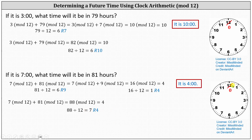Starting at zero again, we count ahead 88 hours: 12, 24, 36, 48, 60, 72, 84, then 85, 86, 87, 88 hours. It's four o'clock.